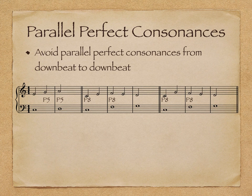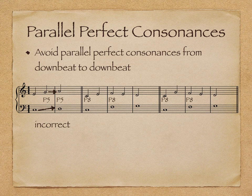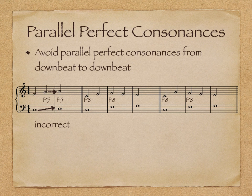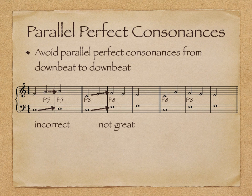An important guideline for second species voice leading is to avoid parallel perfect consonances from downbeat to downbeat. In the example on the left, the upper voice creates a perfect fifth with the lower voice in the second half of the measure, and both voices then move in parallel motion creating parallel fifths — this is incorrect. In the middle example, the perfect octave on the downbeat moves to another perfect octave on the next downbeat after similar motion; these downbeat-to-downbeat parallel octaves are not great, but may be passable if there are no other solutions. The example on the right is a better solution because the upper voice approaches the second downbeat by contrary stepwise motion.